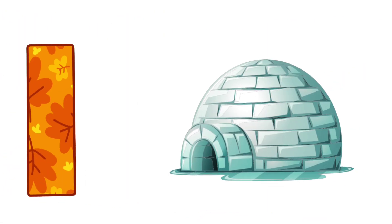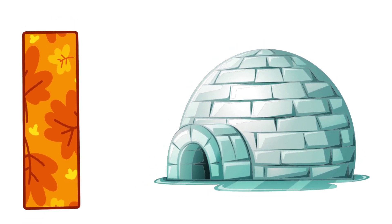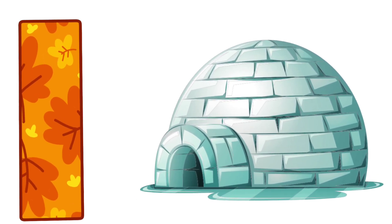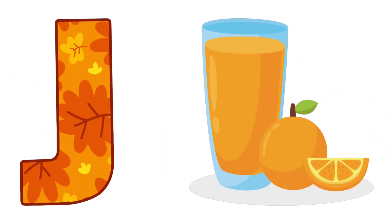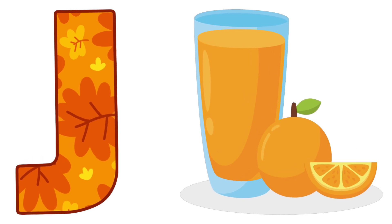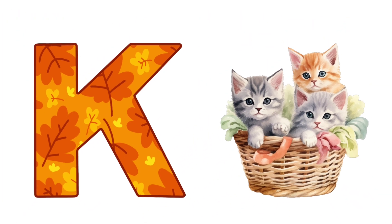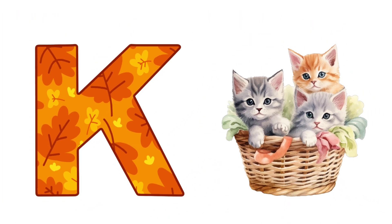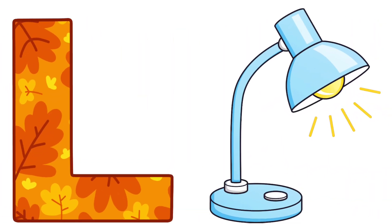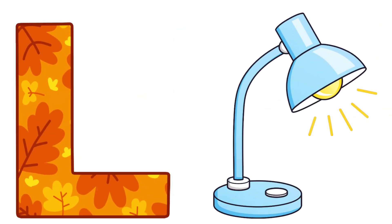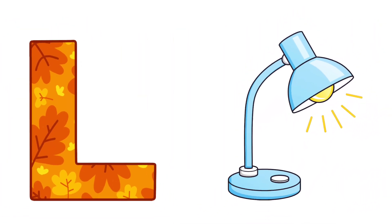I is for Igloo. J is for Juice. K is for Kitten. L is for Lamb.